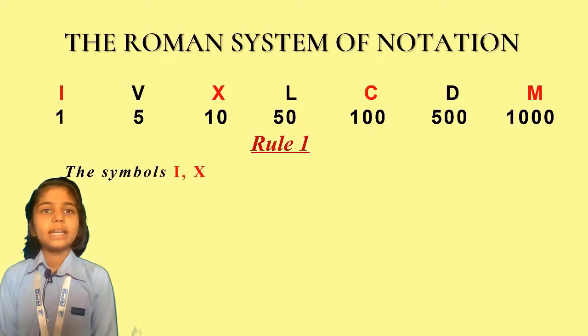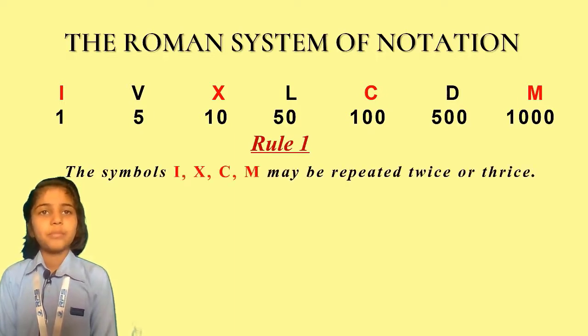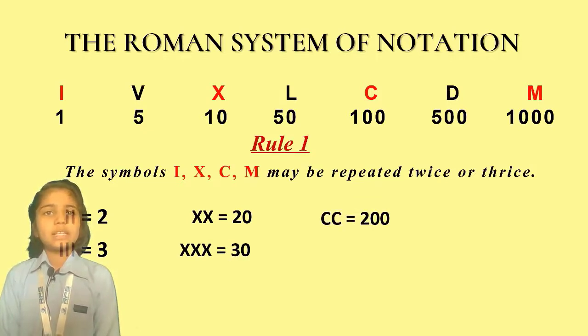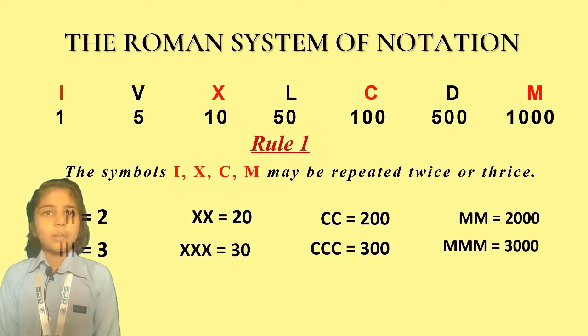Rule number 1. The symbols I, X, C, and M may be repeated twice or thrice. For example, II equals 2, III equals 3, XX equals 20, XXX equals 30, CC equals 200, CCC equals 300, MM equals 2000, MMM equals 3000.